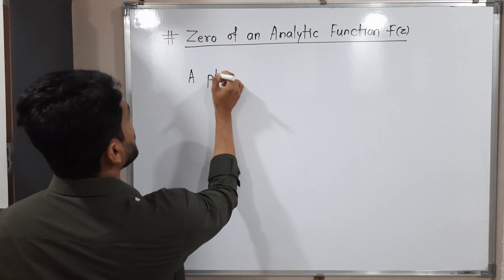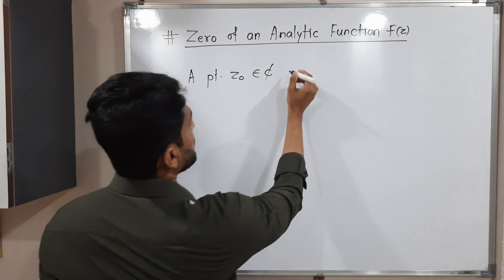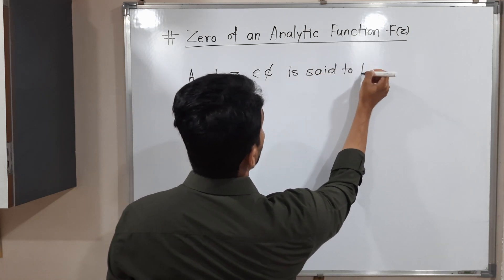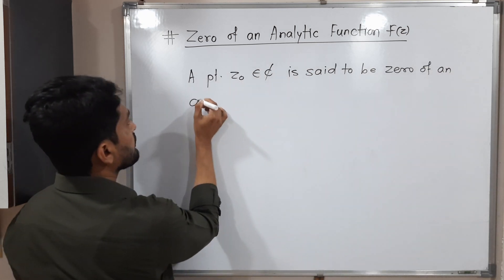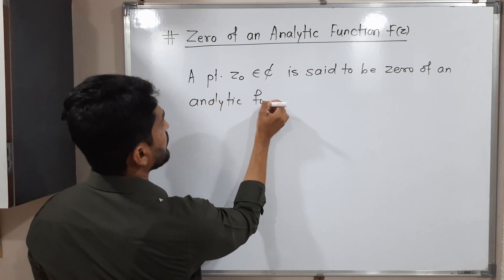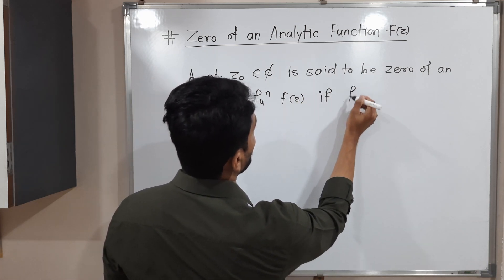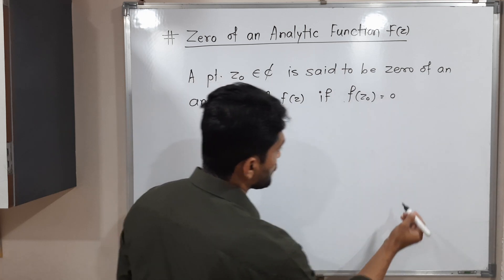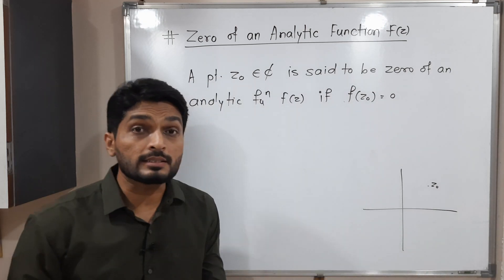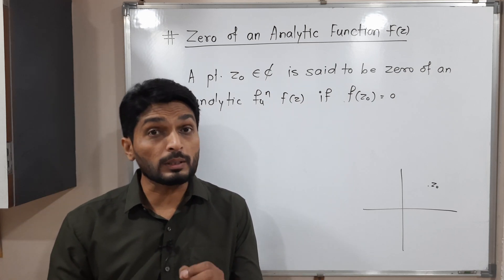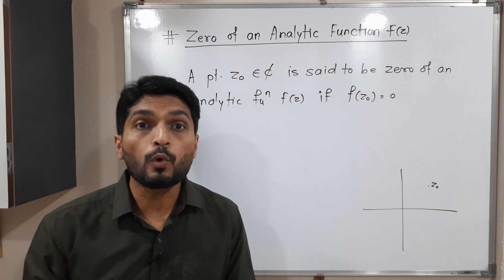A point z-naught — so this is any complex number, any point in a complex plane — is said to be a zero of an analytic function f of z if f of z-naught is equal to 0. That means if we have a complex plane like this and z-naught is any arbitrary point, when we replace z by z-naught and solve, we will get its value 0. Then we say it is a zero of f of z.